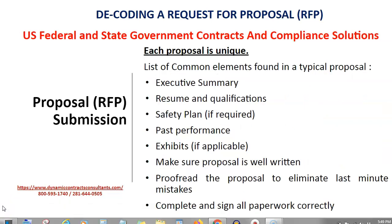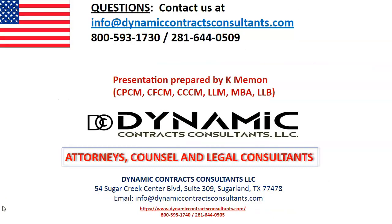Let's take a look now at proposal submission. Each proposal is unique. A list of common elements found in a typical proposal includes: executive summary, resume and qualifications, safety plan if required, past performance, exhibits if applicable. Make sure the proposal is well written, proofread it to eliminate last-minute mistakes, and complete and sign all paperwork correctly. If you have any questions, simply give us a call or email us and we'll gladly get back with you at the earliest convenience. We thank you for watching. This has been a presentation of Dynamic Contracts Consultants.